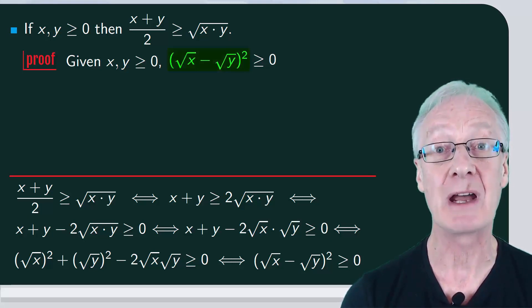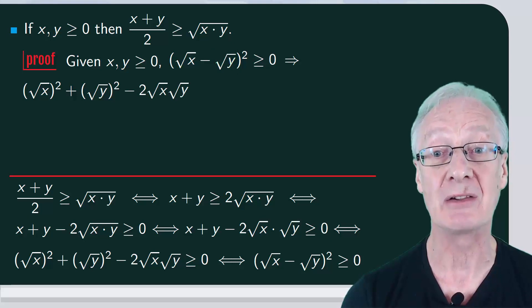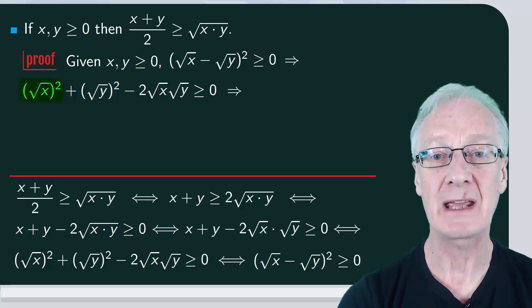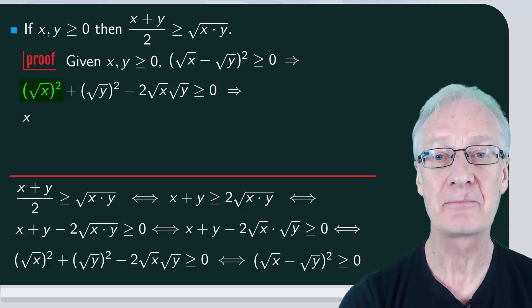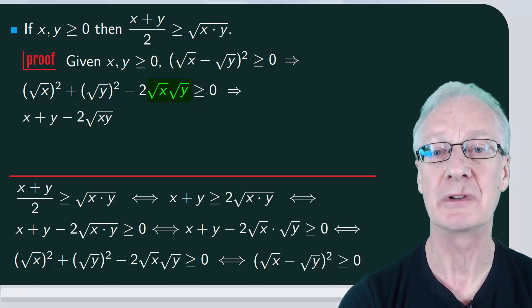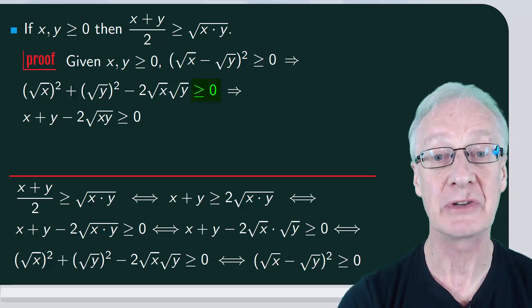Then developing the square on the left side, we have that this is the square of the first plus the square of the second minus twice the first times the second. And this is greater than or equal to zero. The square of root x is x plus the square of root y is y minus two times, and we write root x times root y as root x times y. This is greater than or equal to zero.